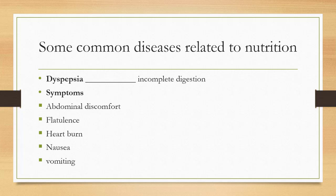Now we will discuss some common diseases related to nutrition. These diseases are dyspepsia, food poisoning, and ulcer. First, dyspepsia — incomplete or imperfect digestion is called dyspepsia. This is not a disease itself; it is a symptom of other disorders or diseases. The symptoms of dyspepsia are abnormal discomfort, flatulence, heartburn, nausea, and vomiting.